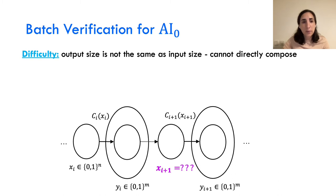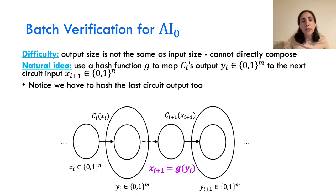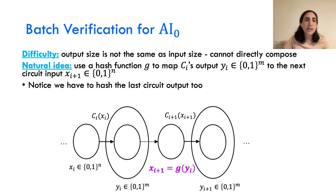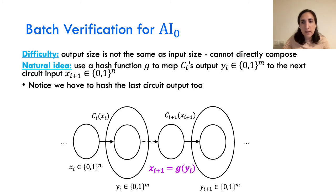The difficulty here compared to our warm-up example is that the output size is not the same as the input size, and therefore we cannot directly compose. We solve this by using a hash function G that maps c_i's output of size m to the next circuit's input of size n. We also need to hash the last circuit. If G were perfectly injective on the set of images of each circuit to the next circuit's input, we would be done. But that seems hard to construct, so at the moment we think of G as a random function, though we'll need to de-randomize it eventually.